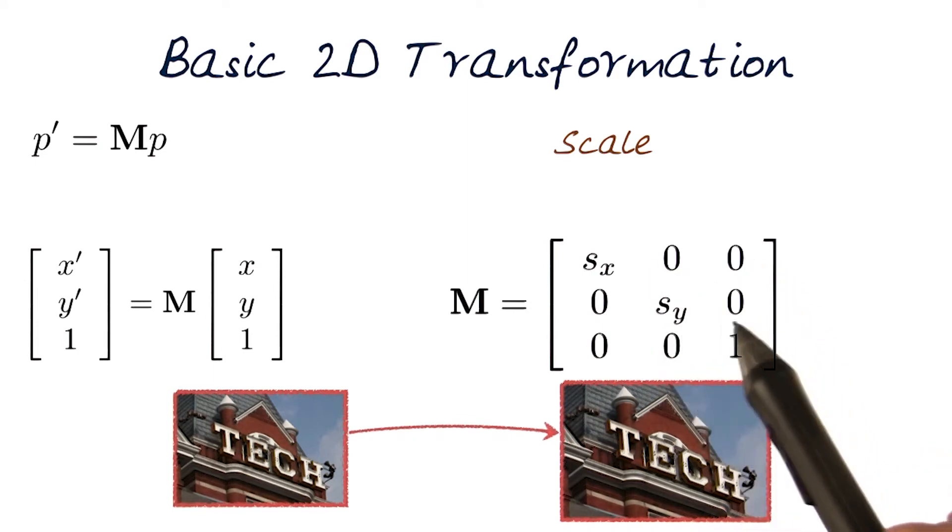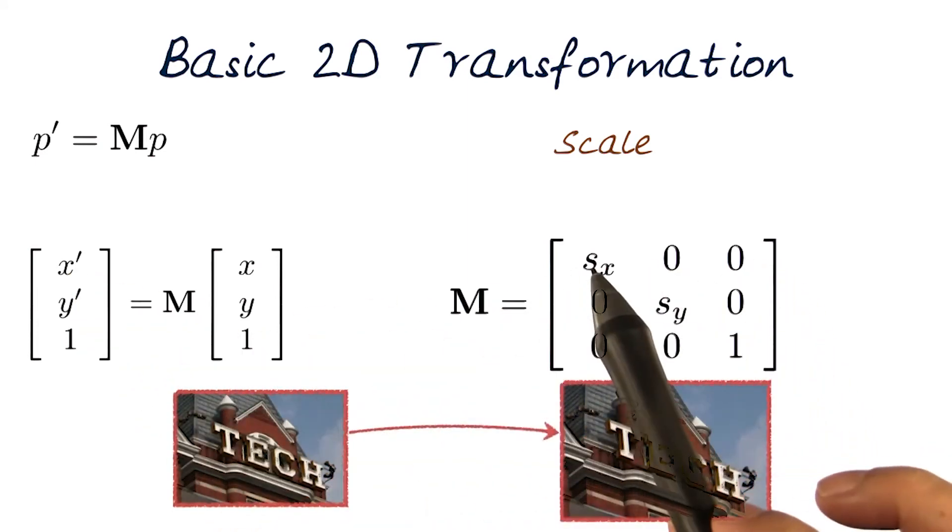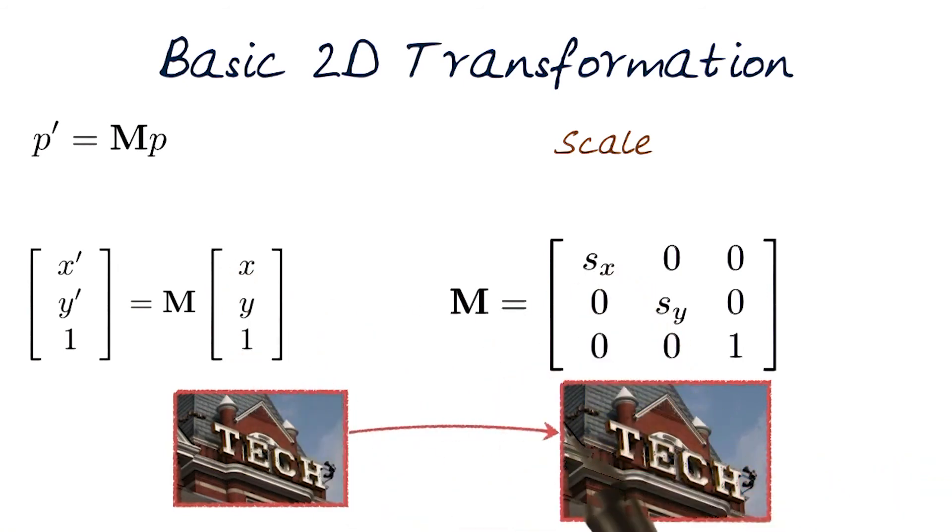And of course, the rest of it will work out because what will happen is x prime times s_x times x will be the result, and that's exactly what. So this gives me a nice three by three matrix for being able to do things like scaling.